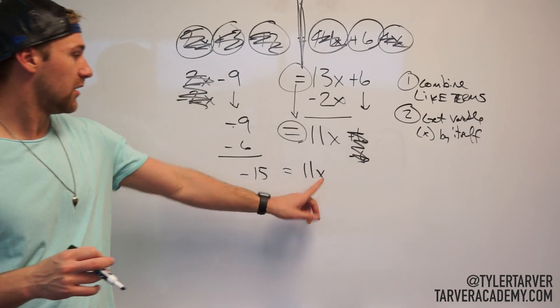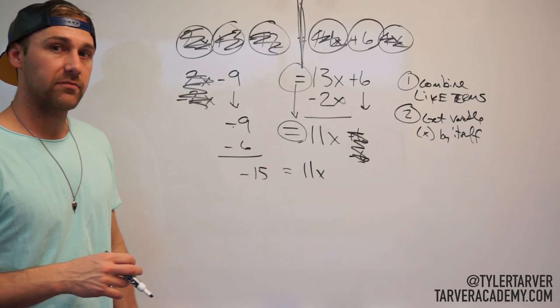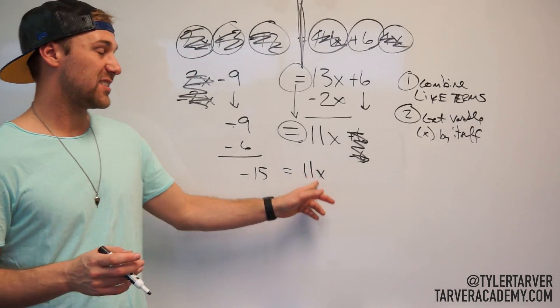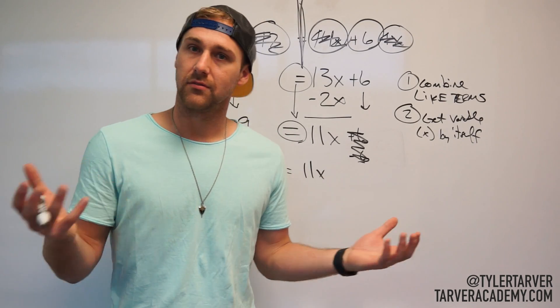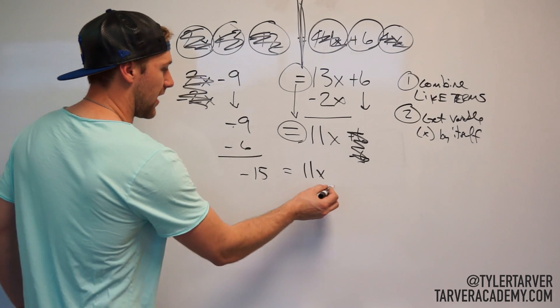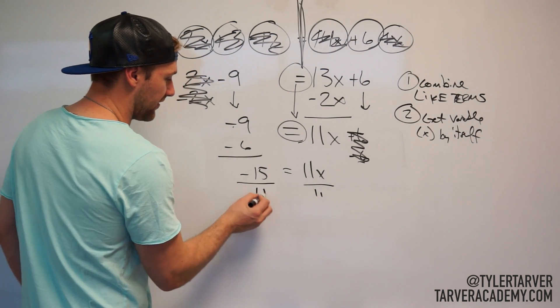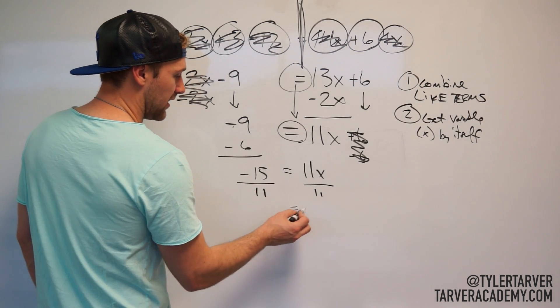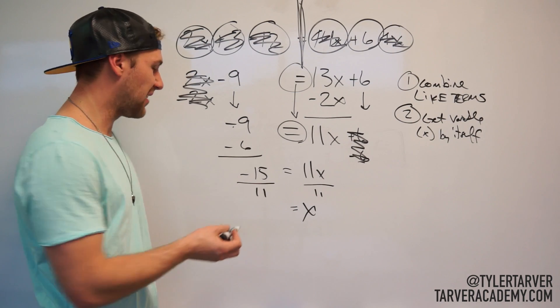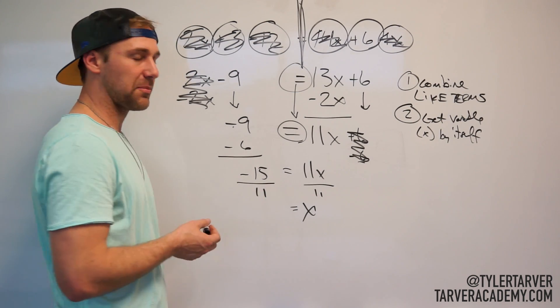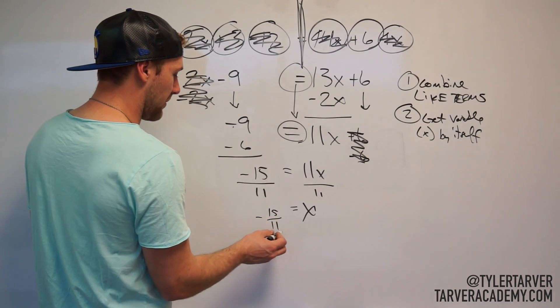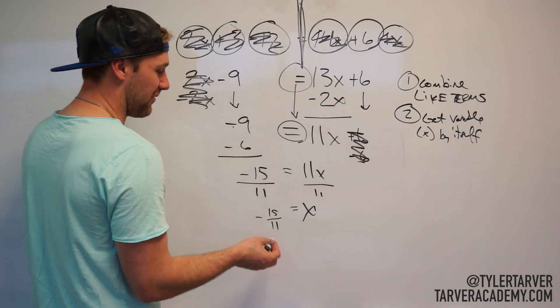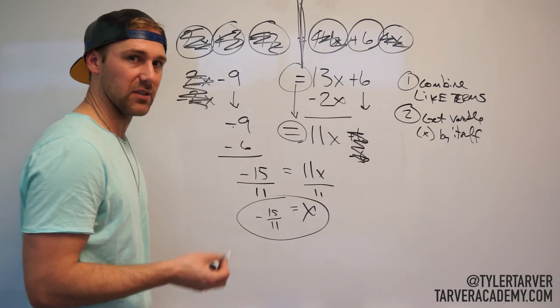Last thing is I want to get x by itself. How do I get rid of that 11? It's 11 times x. What's the opposite of multiplying or times? That's right, divide. So we're going to divide by 11. Negative 15 divided by 11, does that simplify any? Can we simplify 15 divided by 11? No, 11 is a prime number, it can't be reduced. So I would leave it as 15 divided by 11. You could make it one and four elevenths, but that looks dumb unless your teacher wants it, then it looks great.